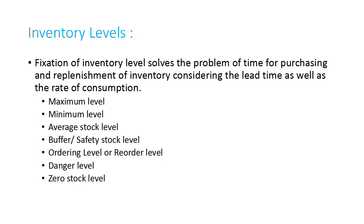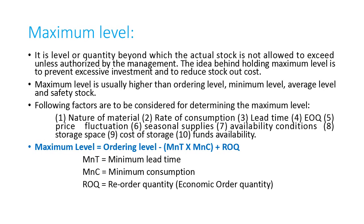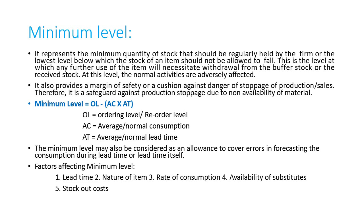Now let us discuss inventory levels. Maximum level is the level beyond which actual stock is not allowed, and it can be calculated as: ordering level minus the product of minimum lead time and minimum consumption, plus the reorder quantity or economic order quantity. Similarly, the minimum level can be calculated as ordering level minus the product of average consumption and average lead time.